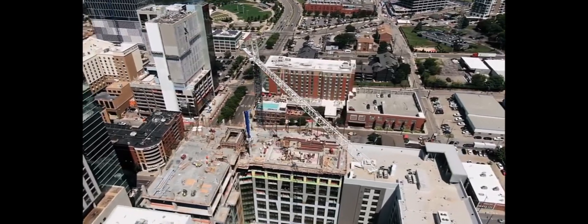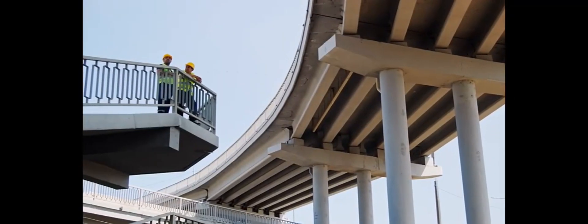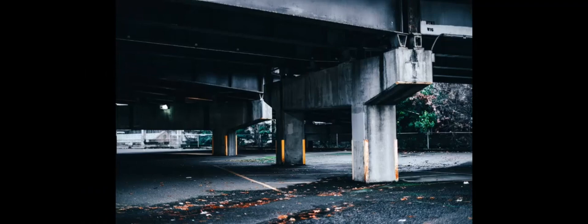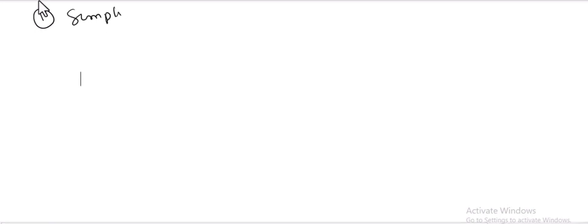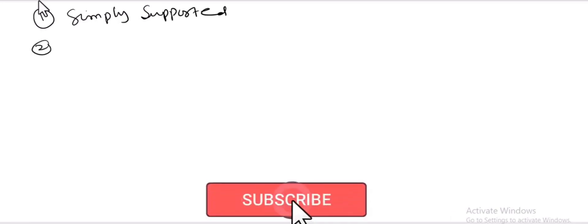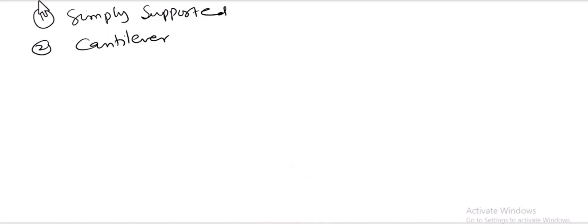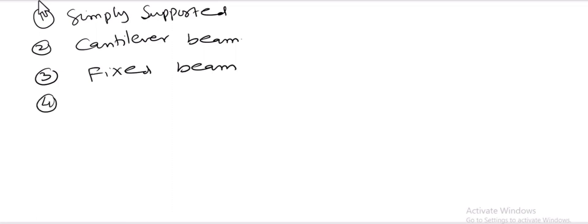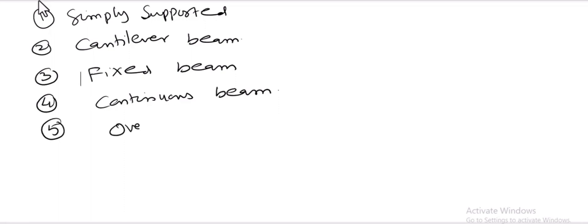Now let's start discussing the different types of beams. The most frequently used types of beams in the construction industry are five types: number one is simply supported beam, second is cantilever beam, third is fixed beam, fourth is continuous beam, and fifth is overhanging beam.